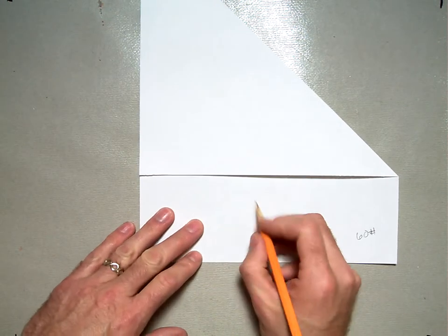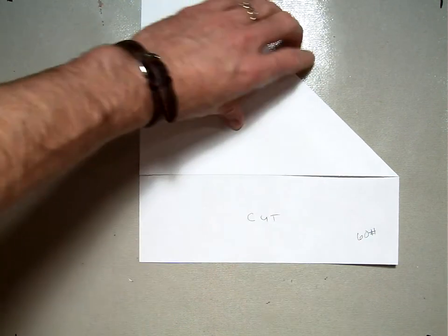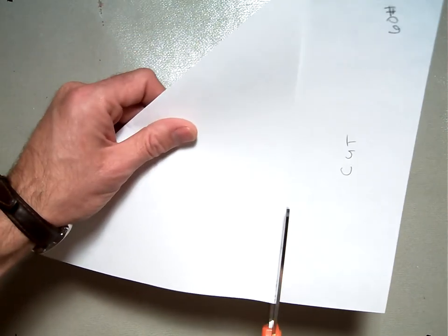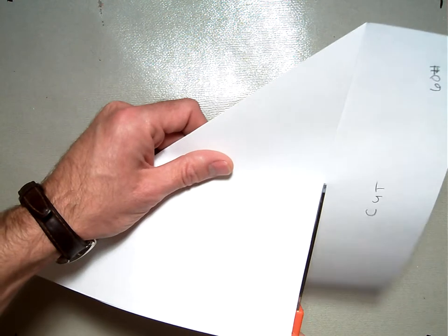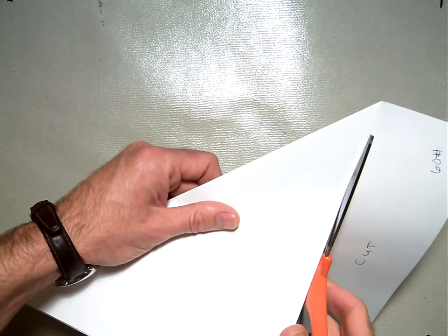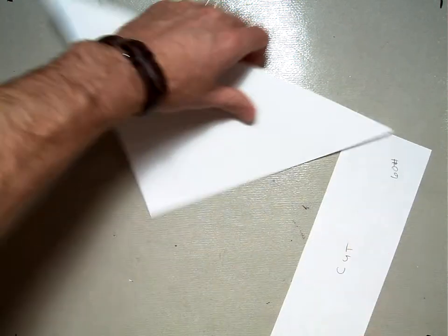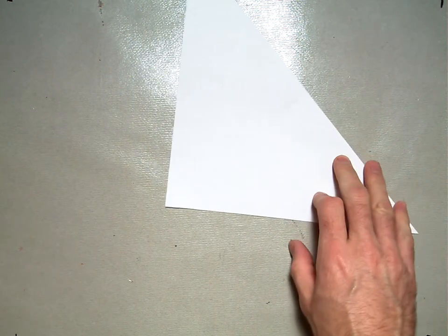Then what you're going to do is cut this bottom piece off. Now if you already have an origami square from a package or something, you can just use that. But that's how you square off your paper.